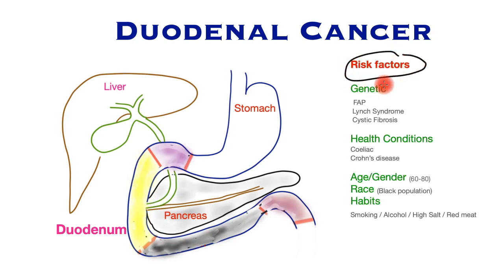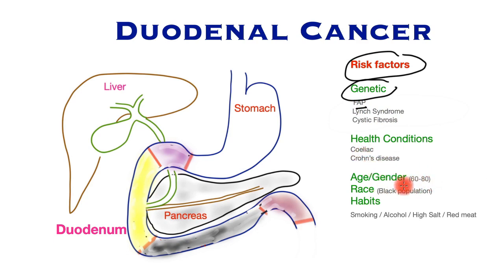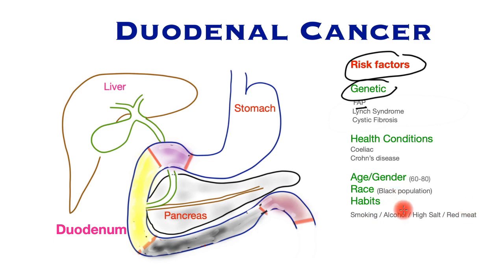The risk factors of duodenal cancer include genetic conditions such as familial polyposis syndrome, Lynch syndrome, and cystic fibrosis, or health conditions such as celiac disease and Crohn's disease. People in the ages of 60 to 80 have a higher risk, with males having a slightly higher chance. It is also more common in the Black population, and people who smoke or drink excessive alcohol or consume high salt or excessive red meat have a higher risk of duodenal cancer.